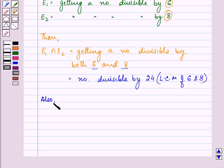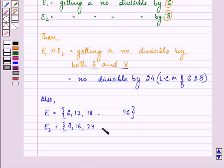So, the elements that will be in event 1 will be 6, 12, 18 and so on till 96. Whereas, the elements that will be in event 2 are 8, 16, 24 and so on till 96.